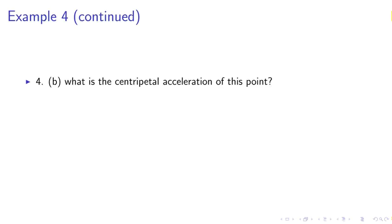Example 4. What is the centripetal acceleration of this point? The solution is that acceleration a equals omega squared r. Substituting values of omega and r, we obtain 7.9 times 10 to the 5 meters per second squared.